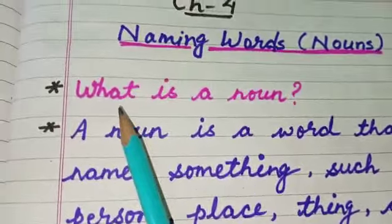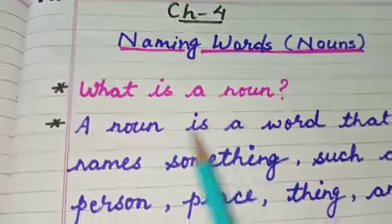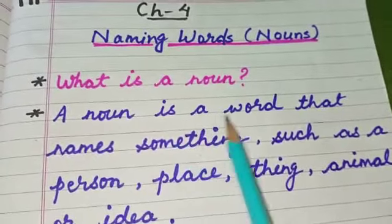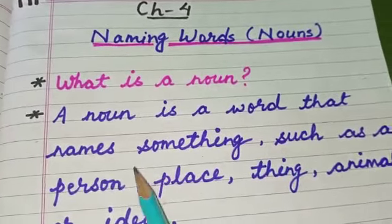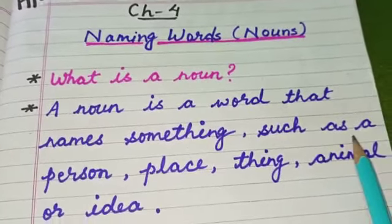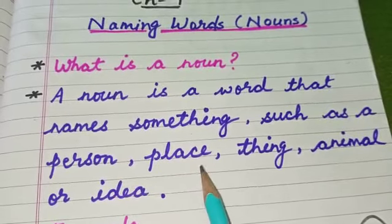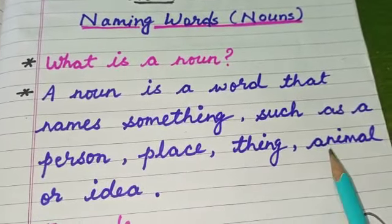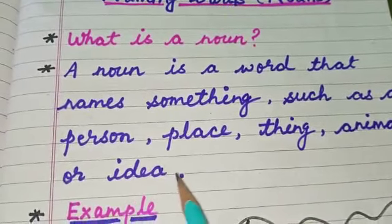Now students, what is a noun? A noun is a word that names something such as a person, place, thing, animal, or idea.